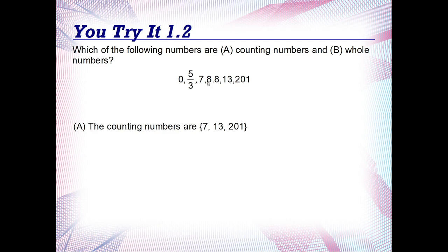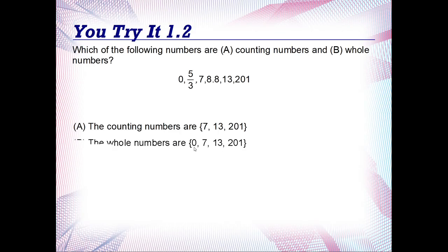So the counting numbers are 7, 13, and 201. And the whole numbers are just the counting numbers and zero. So the whole numbers are going to be 0, 7, 13, and 201.